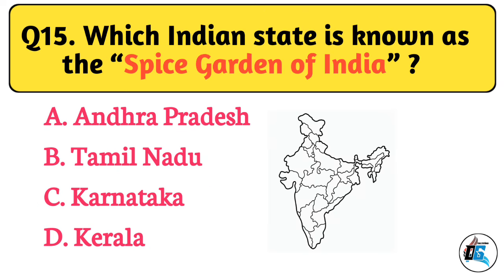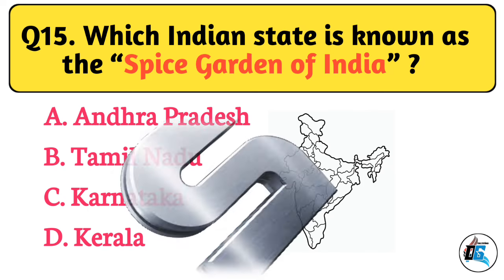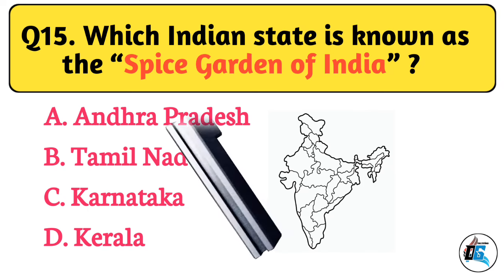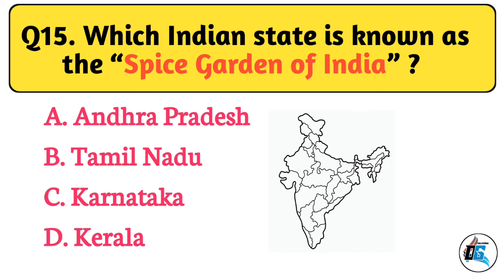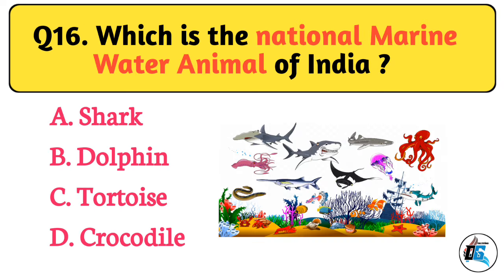Question No. 15. Which Indian state is known as the Spice Garden of India? The right answer is Option D: Kerala.